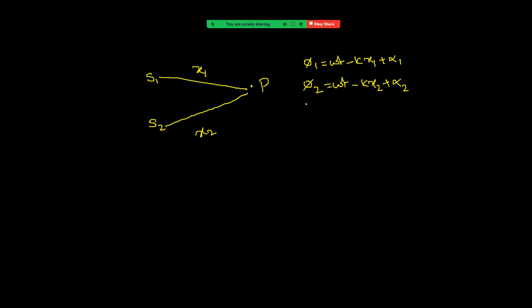Now the phase difference at point P is given by delta-phi = phi1 − phi2, which equals k·Δx + Δα, where Δx is the path difference (it may be x1 − x2 or x2 − x1, whichever is more), and alpha here means α1 − α2.